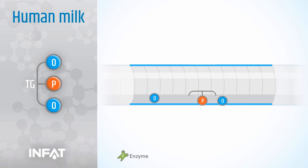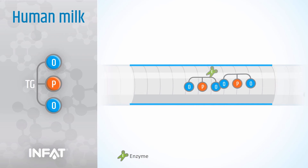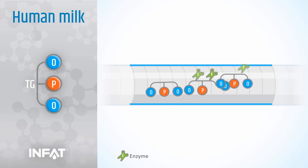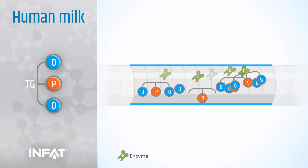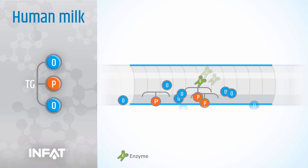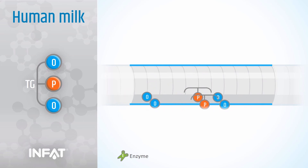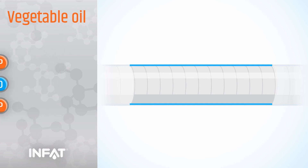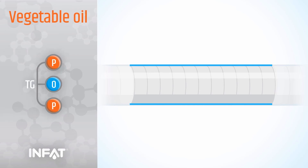Now we have a monoglyceride and two free fatty acids that are easily and readily absorbed. We can see more molecules coming in, cleaved and absorbed. However, in most infant formula, the fat used is standard vegetable oil.